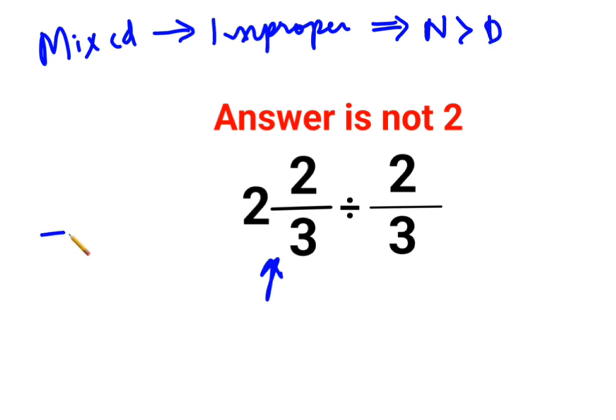So here, when I want to convert it, the denominator will remain the same. In the numerator, what happens is the integer part and the denominator get multiplied, and the numerator gets added.